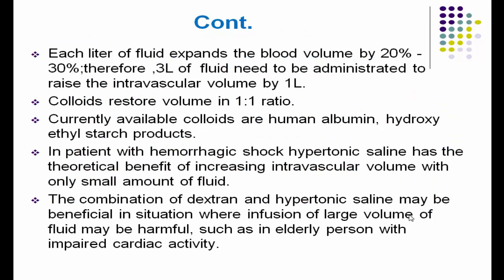Each liter of fluid expands the blood volume by 20–30%, so three liters of fluid are needed to raise the intravascular volume by one liter. Colloids restore volume in a one-to-one ratio. Currently available colloids include human albumin and hydroxyethyl starch. In hemorrhagic shock, hypertonic saline has the theoretical benefit of increasing intravascular volume with only a small amount of fluid. The combination of dextran and hypertonic saline may be beneficial in situations where infusion of large volumes may be harmful, such as in elderly patients with impaired cardiac activity.